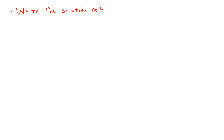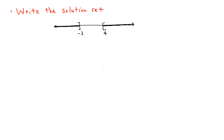The first way is the graphical version — we draw a number line. We have negative 3 included (closed dot) and 4 included (closed dot), and we shade the line going left from negative 3 to negative infinity, and right from 4 to positive infinity. That is the graph of the solution set.